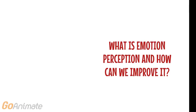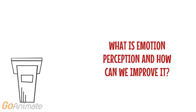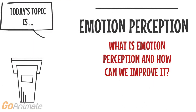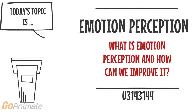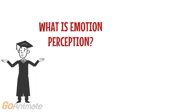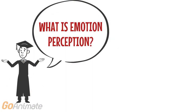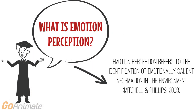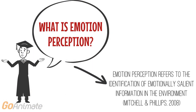The topic of today's presentation is emotion perception. What is it and how can it be improved? Let's begin with a definition. Within psychological literature, the term emotion perception refers to the identification of emotionally salient information within the environment.